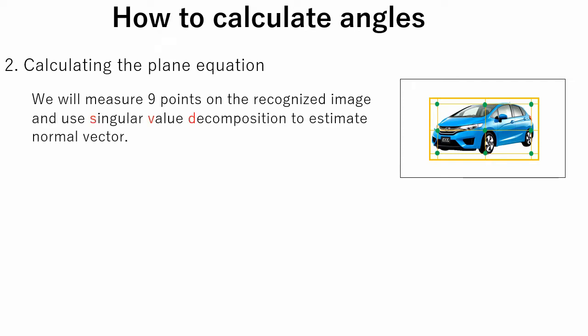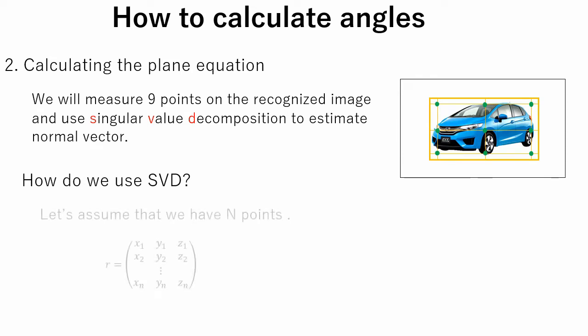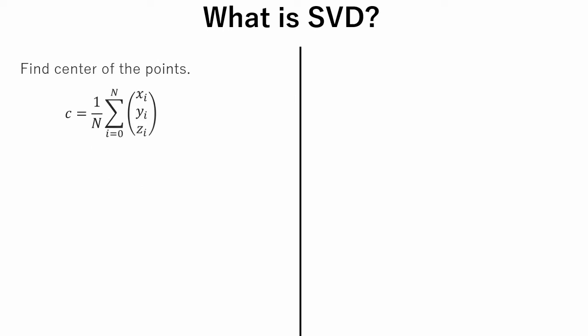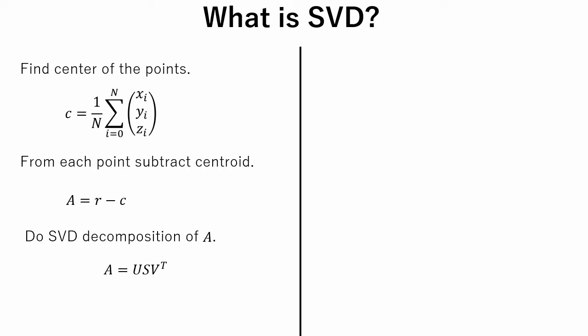To find the normal vector, singular value decomposition will be used. How do we use SVD? Let's assume that we have n three-dimensional points. First, the center coordinates of all these points are calculated. Second, the center of the points is moved to the coordinate origin — meaning a centroid is subtracted from each point. Finally, SVD decomposition is performed, and the last column of matrix V is the normal vector.